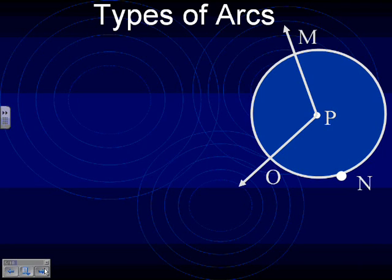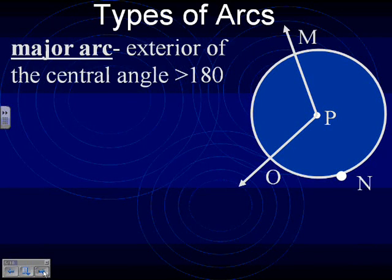First arc is called a major arc. That's pretty important. The names on these, I think, can help you remember what they mean. If you think major, you probably think big or important. That kind of fits here. If it's a major arc, it's exterior of the central angle, and it's greater than 180. So they're the bigger ones. Major is kind of bigger.